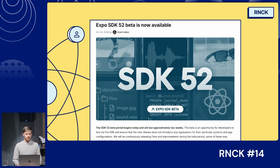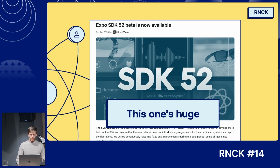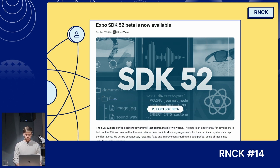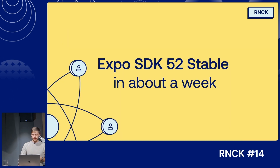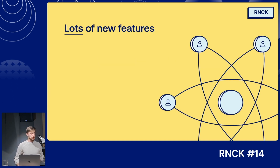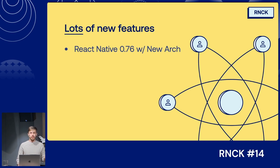Next is Expo SDK 52 beta. I was told that was the biggest recent SDK and it took a lot of development time to bring it to people. Currently it's in beta, which means it will be stable in about a week from now. It came with a lot of improvements and new features, including React Native 0.76 with new architecture by default, including in Expo Go.